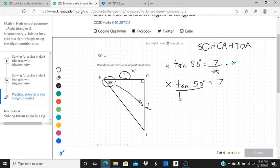I'm going to divide both sides by the tangent of 50 degrees. On this side, I'm going to cancel out. And so we'll get x is equal to 7 divided by the tangent of 50 degrees.